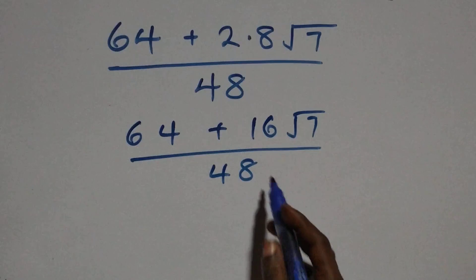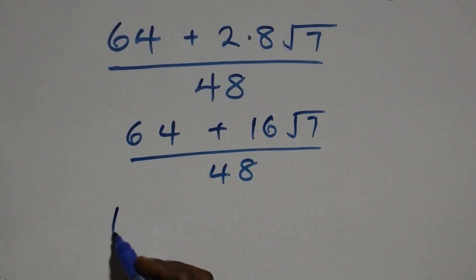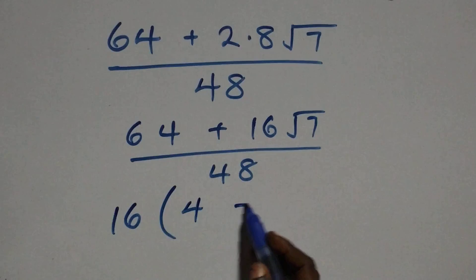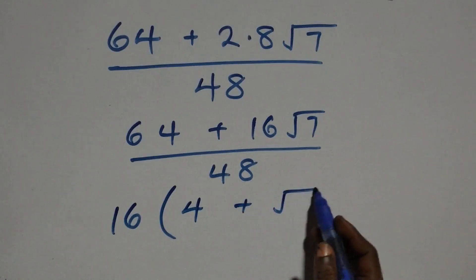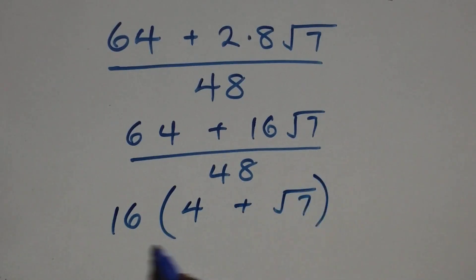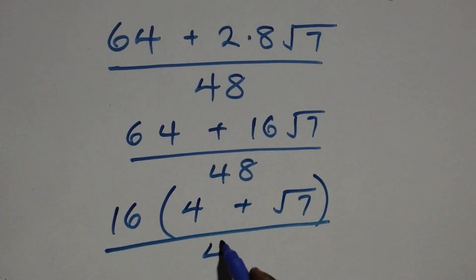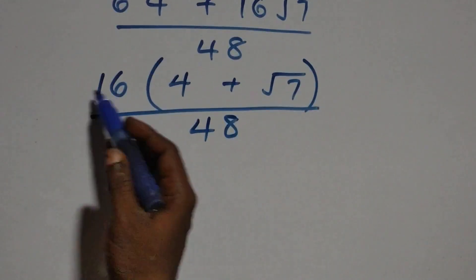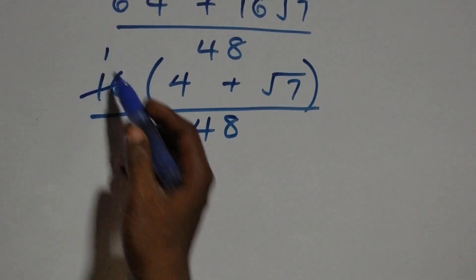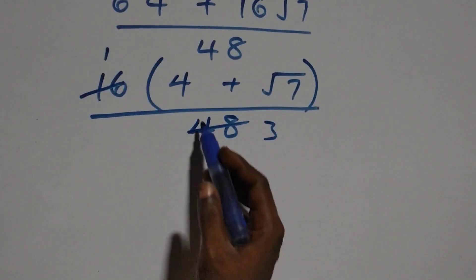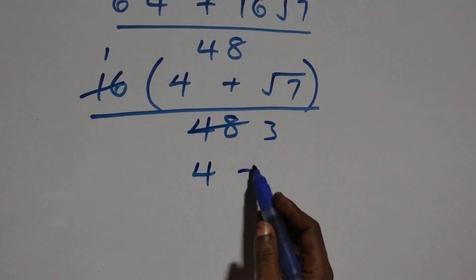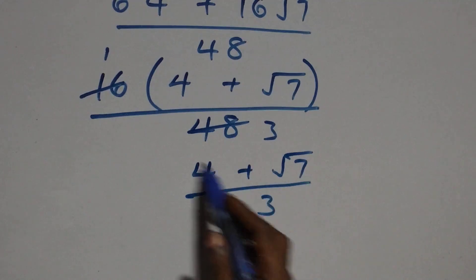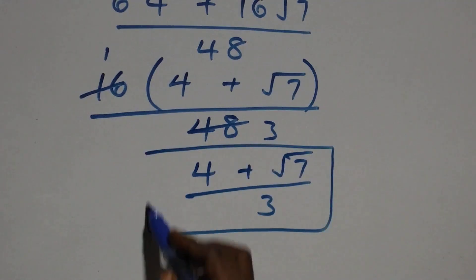Up here, sixteen is common in the numerator. We factor out sixteen: sixteen into bracket four plus root seven, close bracket, over forty-eight. Sixteen goes into sixteen once, and sixteen goes into forty-eight three times. So we are left with four plus root seven over three — the same result as from the first method.